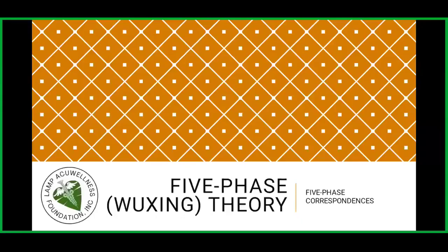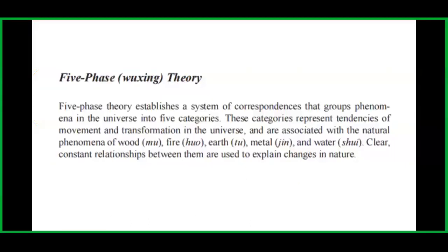Let's go to the five phase theory. The topic is five phase correspondences. Five phase theory establishes a system of correspondences that groups phenomena in the universe into five categories. These categories represent tendencies of movement and transformation in the universe and are associated with the natural phenomena of wood, fire, earth, metal, and water. Clear constant relationships between them are used to explain changes in nature.